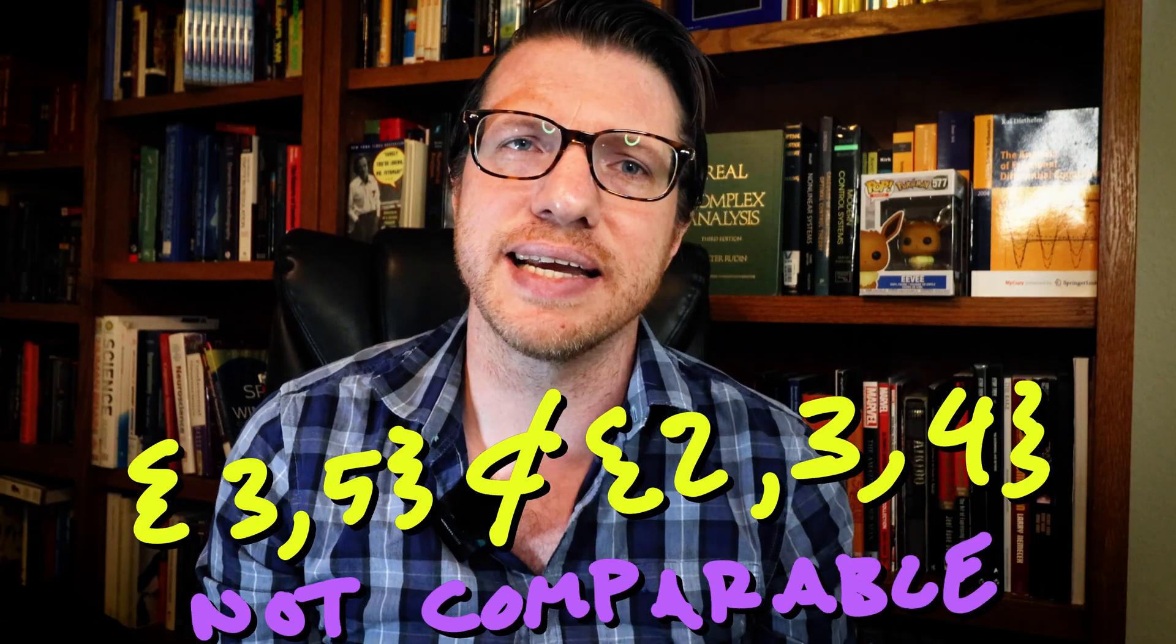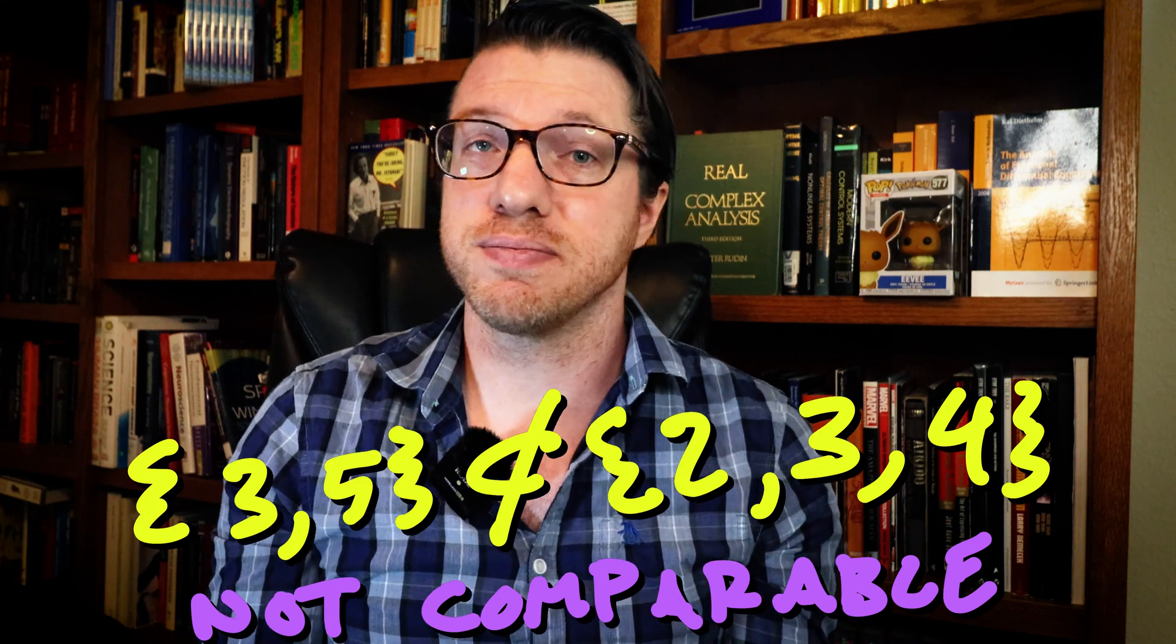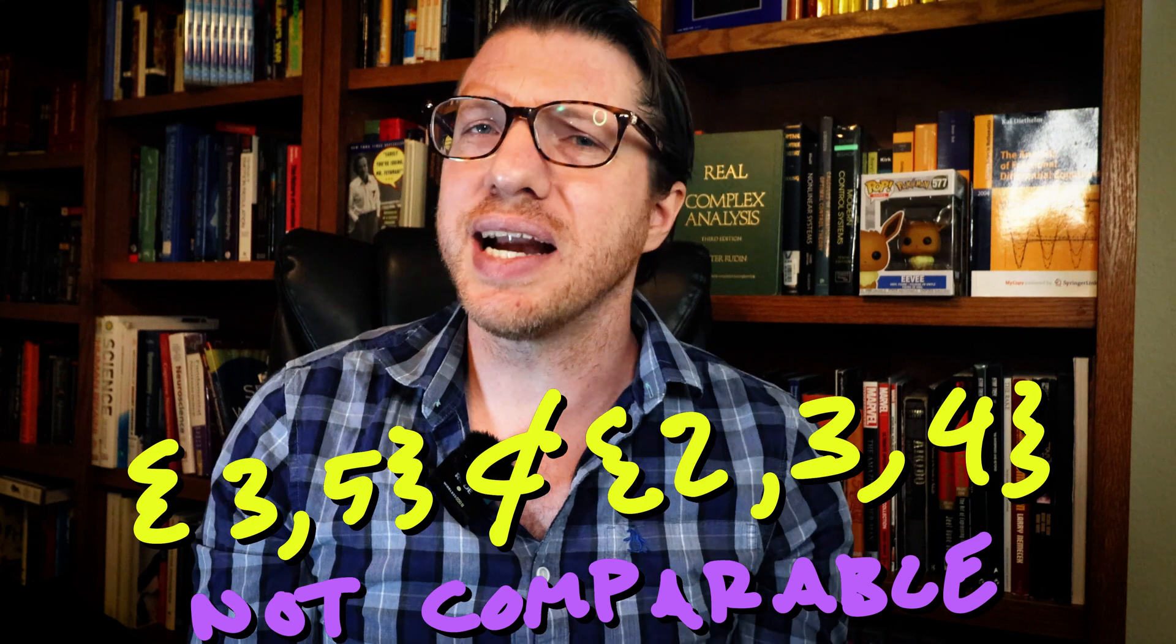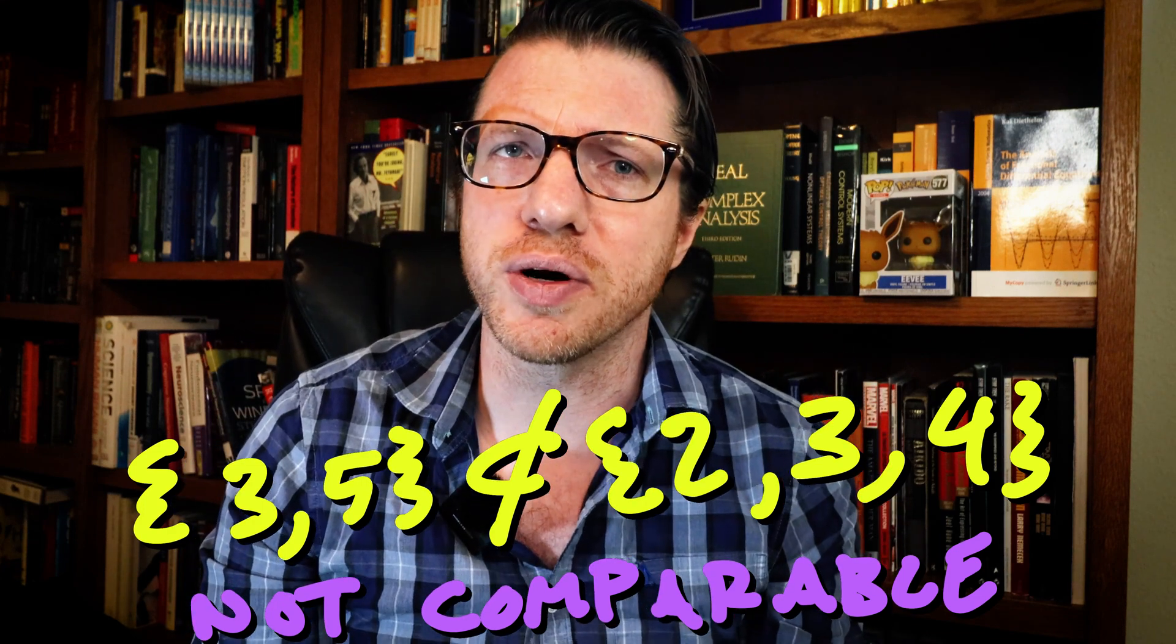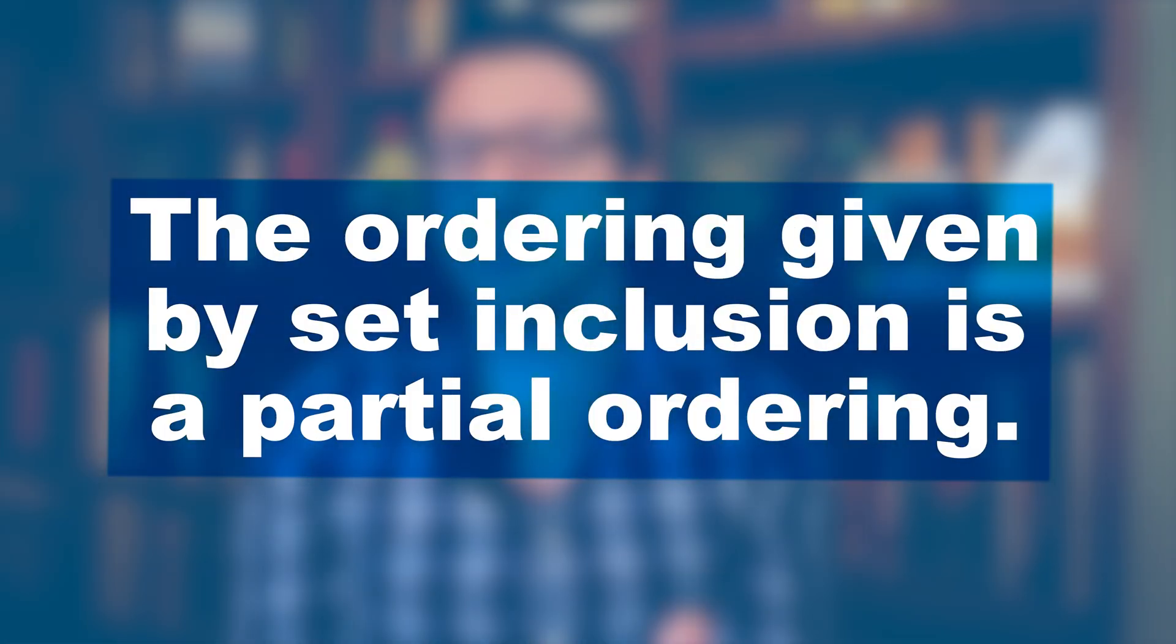However, 3, 5 is not contained in that first set. Even though it is smaller in the number of elements it contains, that is its cardinality, we cannot say that 3, 5 is smaller than 2, 3, 4 under the ordering relation defined by set inclusion. That means that set inclusion is actually a partial ordering here.